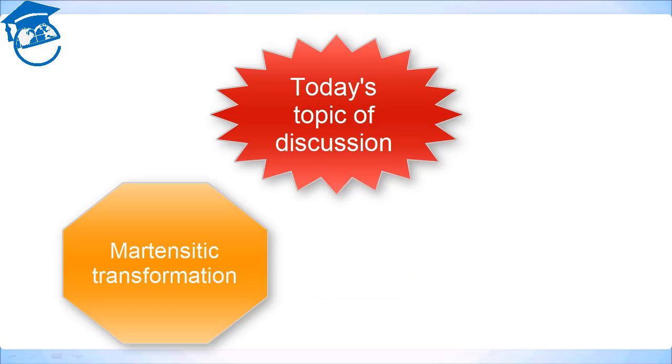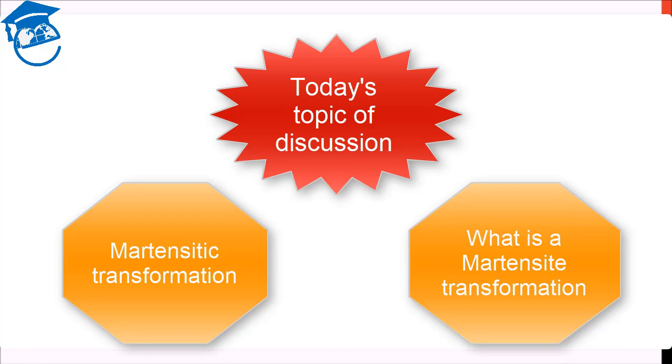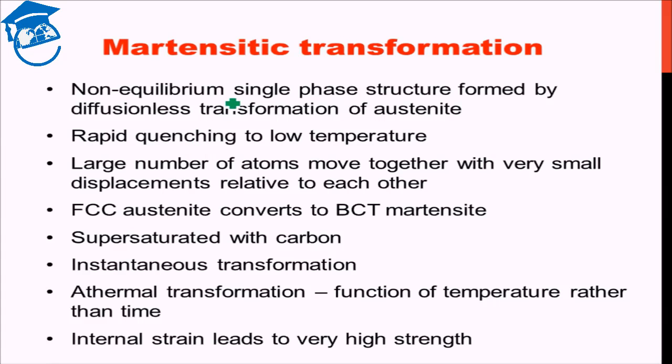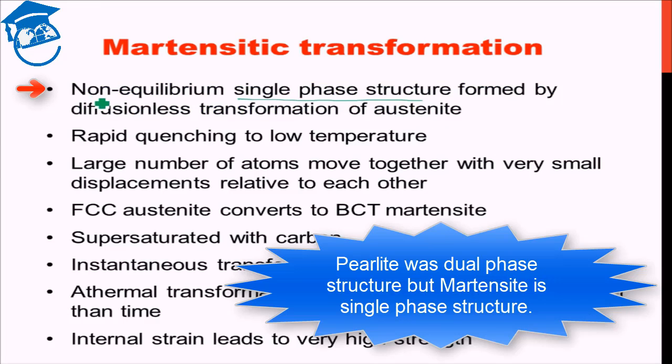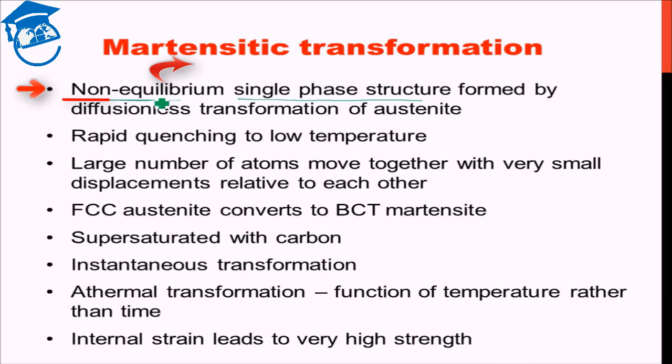To start with, martensite is a non-equilibrium single-phase structure. Pearlite was a dual-phase structure, but martensite is a single-phase structure. But it is a non-equilibrium phase, a metastable phase. It is not the phase which is energetically most stable, but it is the phase which is present because of kinetic hindrance. Martensite is formed by diffusionless transformation of austenite. For the formation of bainite and pearlite, you saw that there has to be diffusion taking place. But martensitic formation is a diffusionless process.